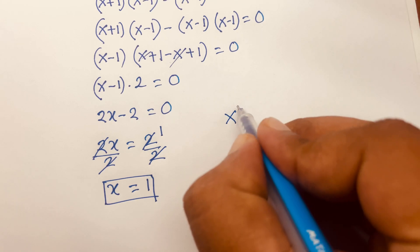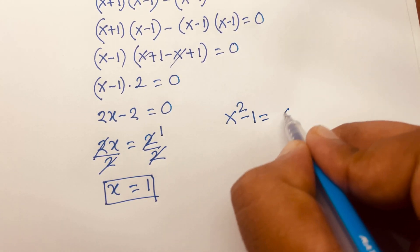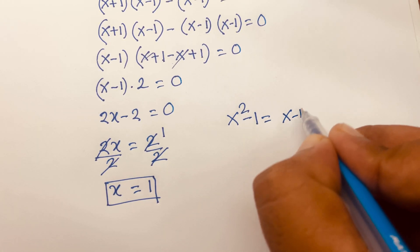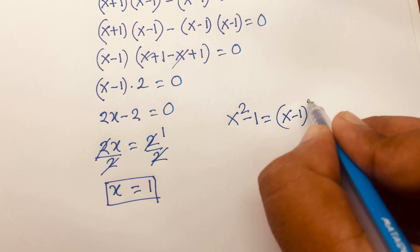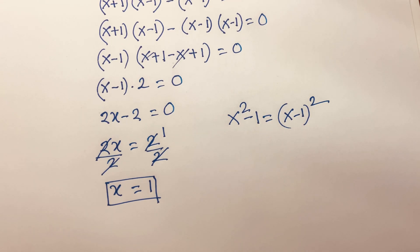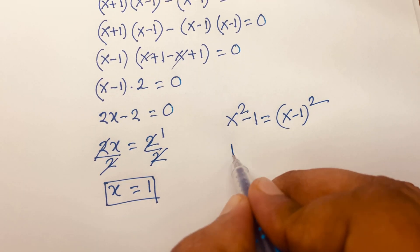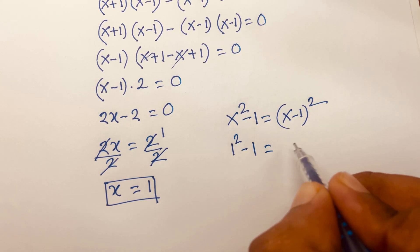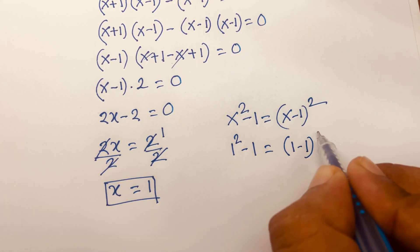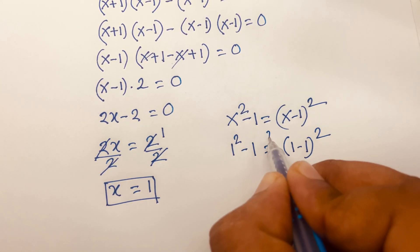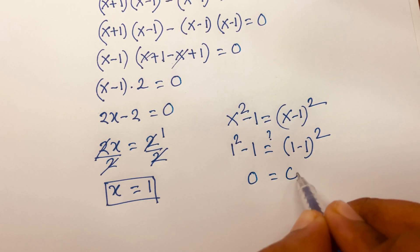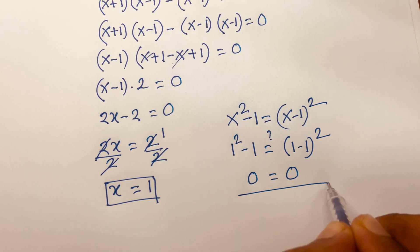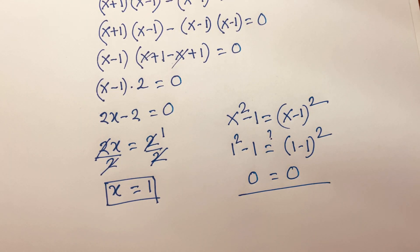Now let's verify: our equation is x squared minus 1 equals (x-1) squared. Substituting x equals 1: 1 squared minus 1 equals (1-1) squared, so 0 equals 0. This confirms x equals 1 is the correct answer.